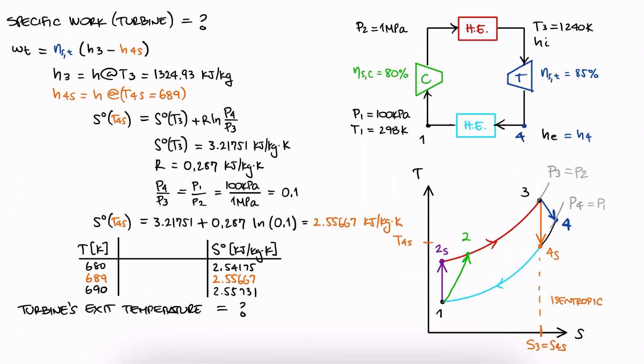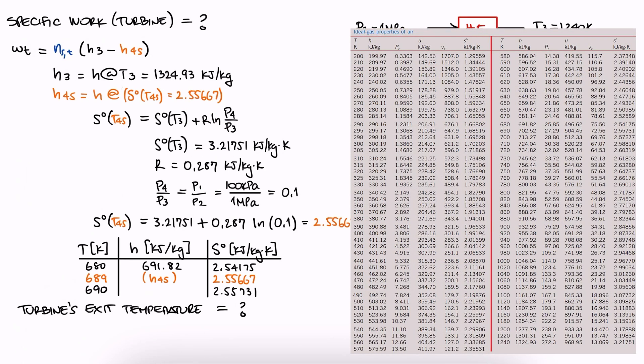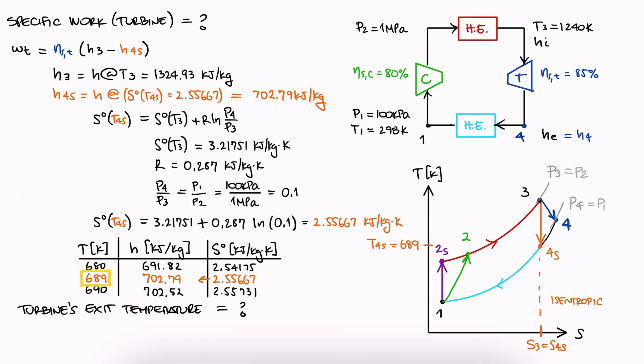Notice that since we were looking for the temperature to find the enthalpy, we didn't really need to find T4s. What we want is the corresponding H value for state 4s, and its reference entropy already fully defines its state. This means that we could just interpolate from S to H directly, without finding T4s first.